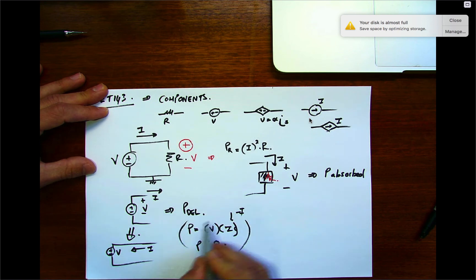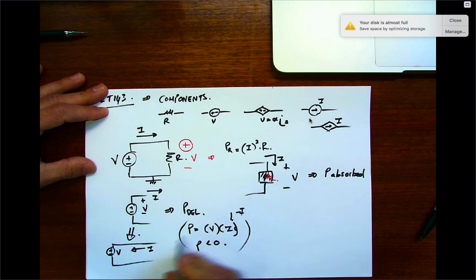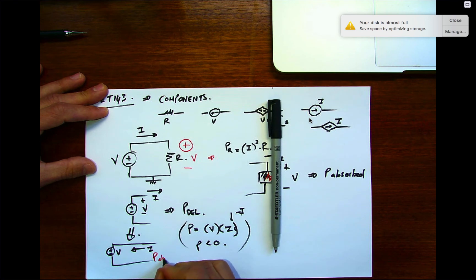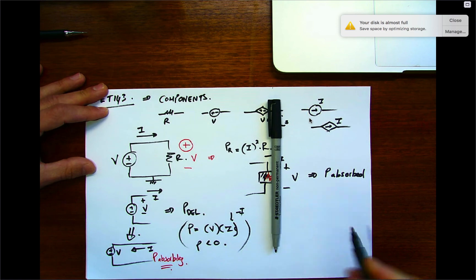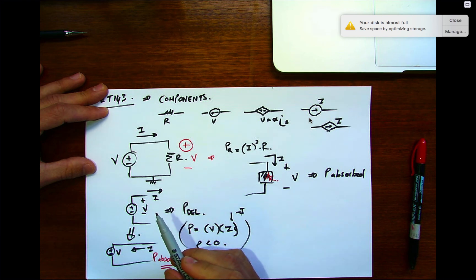So this source would be absorbing power as well. Look at the sign of the voltage, look at the current. Remember that if current enters the plus sign, then it's absorbing. If current leaves the plus sign, then it's delivering. Sources can be delivering or absorbing energy. Resistors only absorb energy.